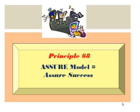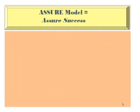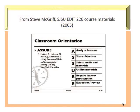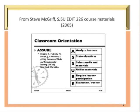Principle 8: The ASSURE Learning Model represents a manner of planning for student learning that will assure success. The ASSURE Model is an instructional guide for planning and conducting lessons that integrate media and technology while focusing on the learner's needs. It is based on six classroom procedures: analyzing learners, stating clear objectives, selecting appropriate methods, media, and materials, utilizing media and materials effectively, involving the learner, and evaluating and revising the process.